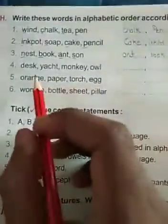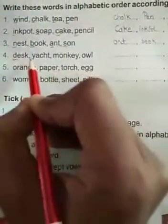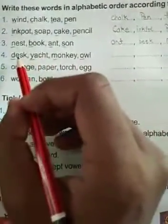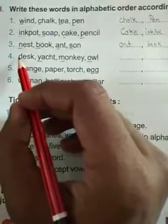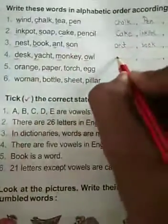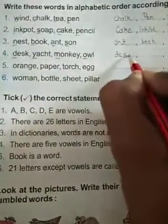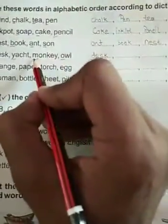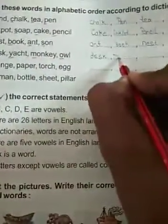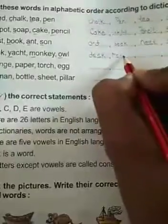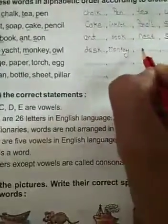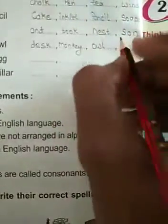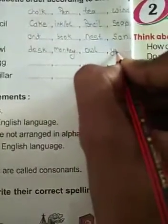Very good. The next set is D, Y, M, and O. The first alphabetical letter here is D — desk. Then M — monkey. Then O — owl (ullu). And the last word is Y — yak.